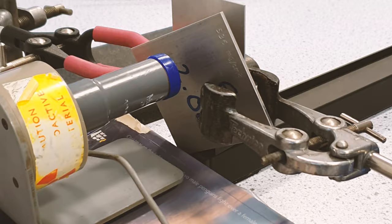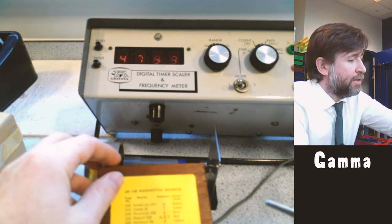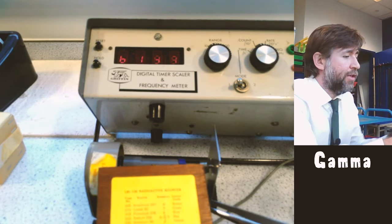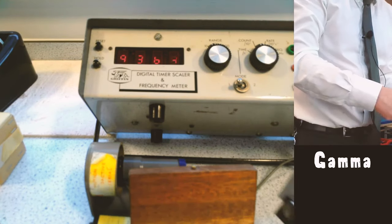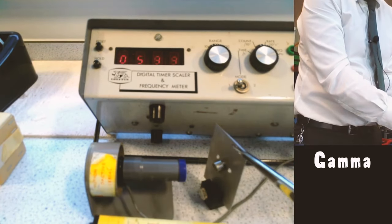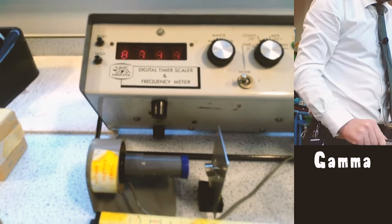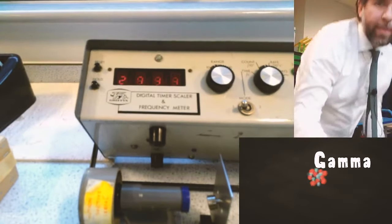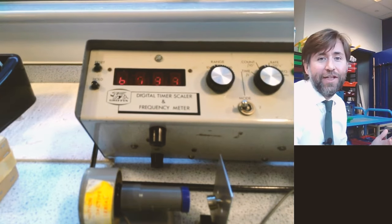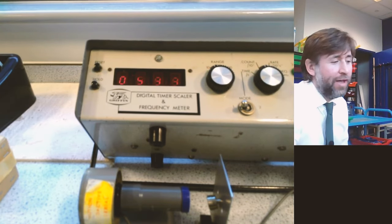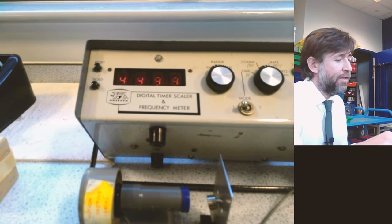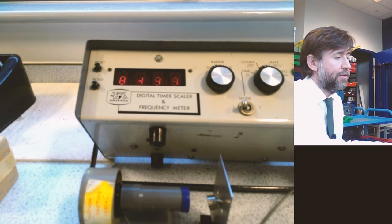So that's strontium 90, and the last one to do is radium, which actually emits all three: alpha, beta and gamma. And you can see that's going around at about a thousand every second. So that's a very active source. This is radium 226.